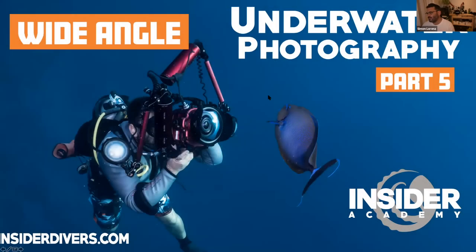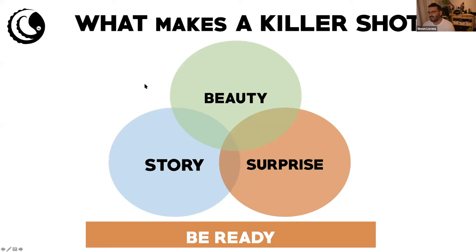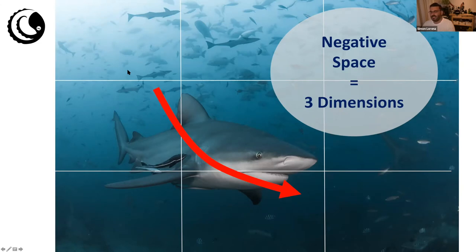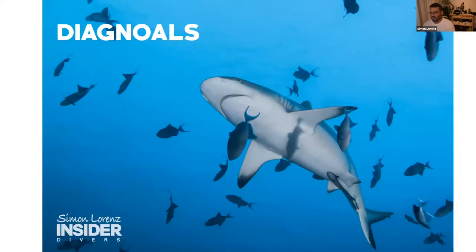With wide-angle underwater photography, most of you have joined previous sessions so many topics should be familiar. My model for making a killer shot is a combination of beauty, story, and surprise — and that's only possible if you're ready to take the shot. Framing by the rule of thirds, leaving negative space to make it three-dimensional — check sessions one and two of this series for those topics, including diagonals.